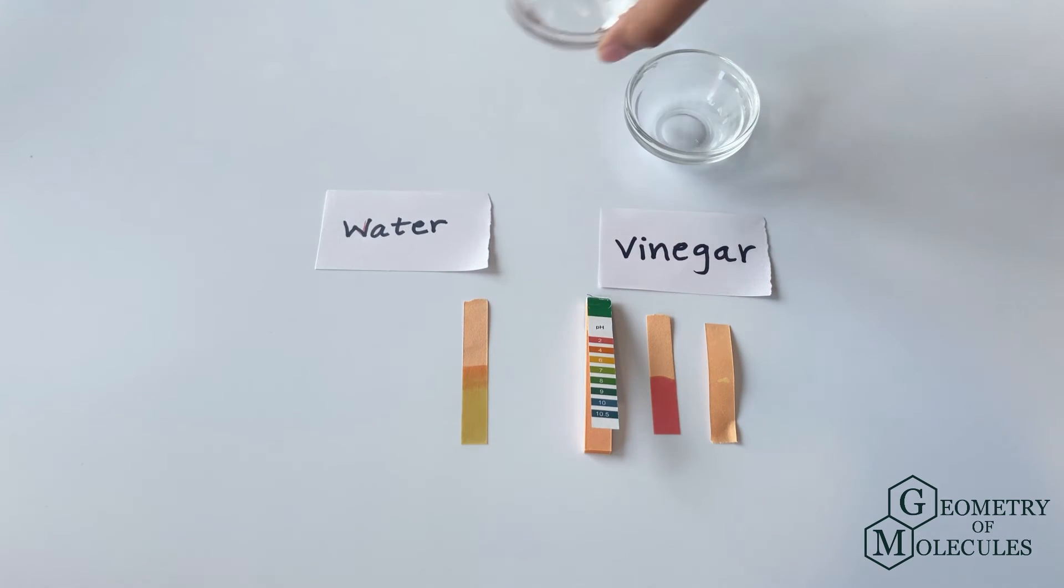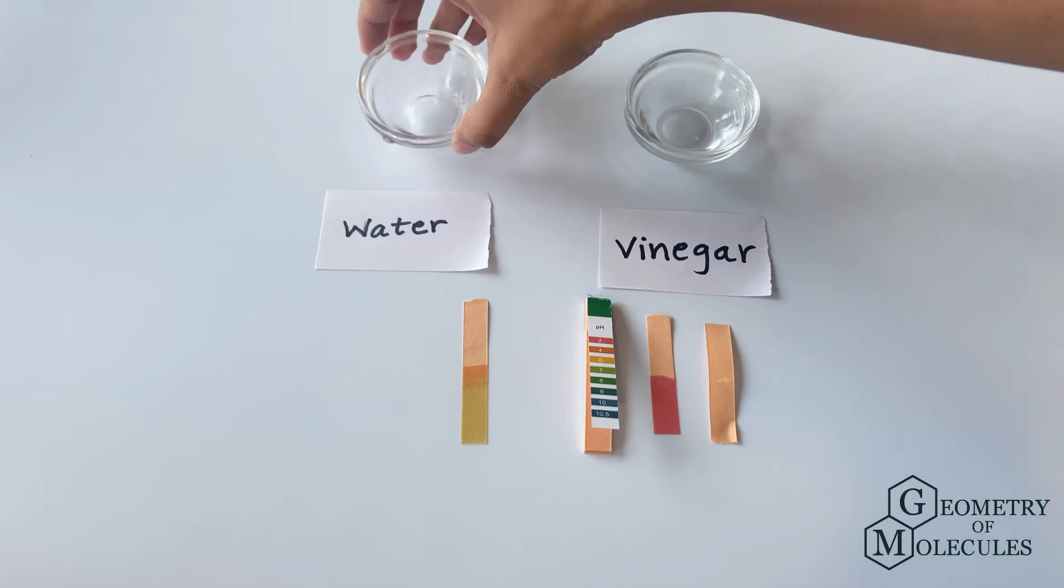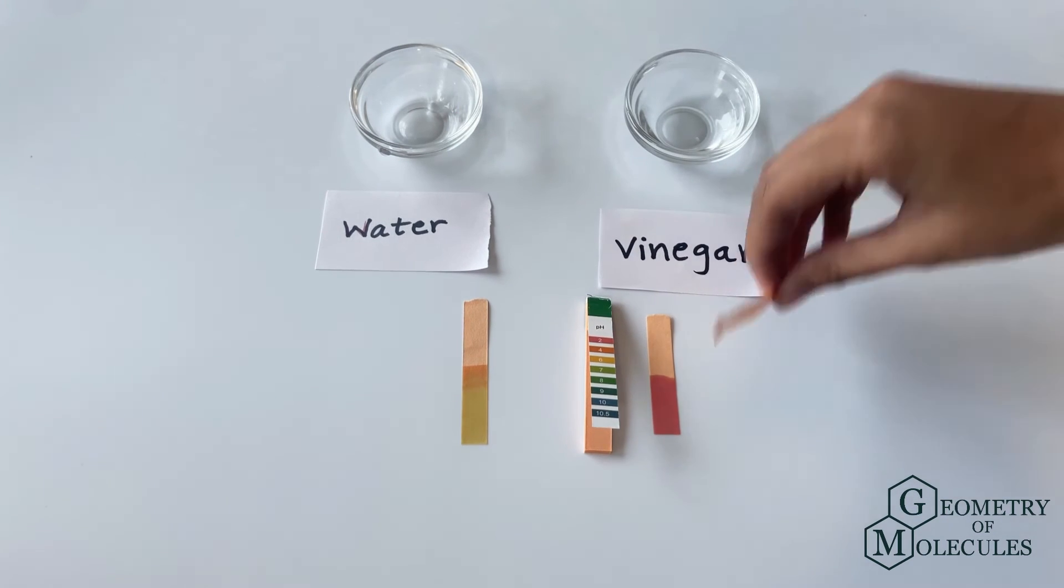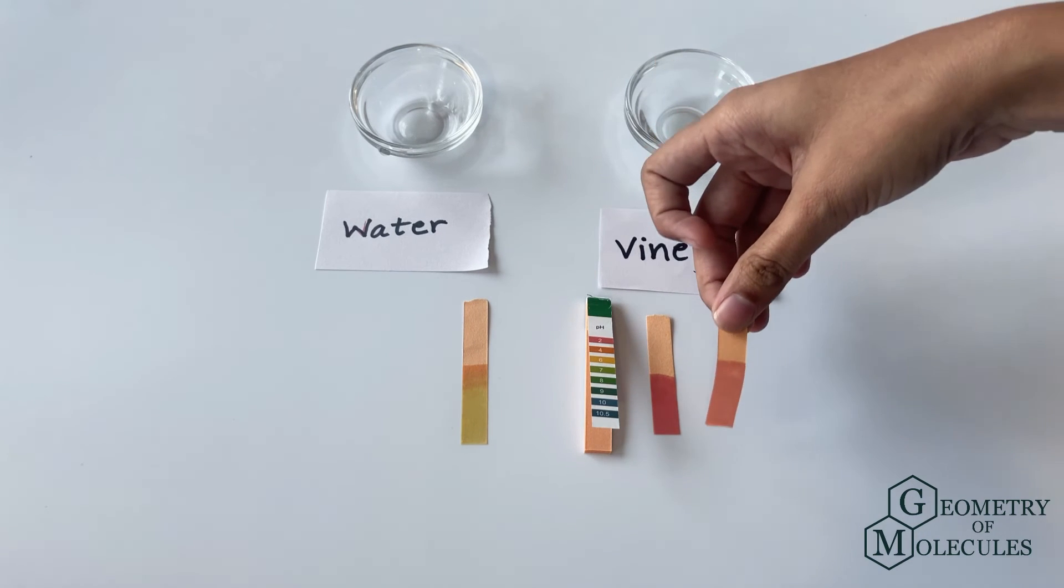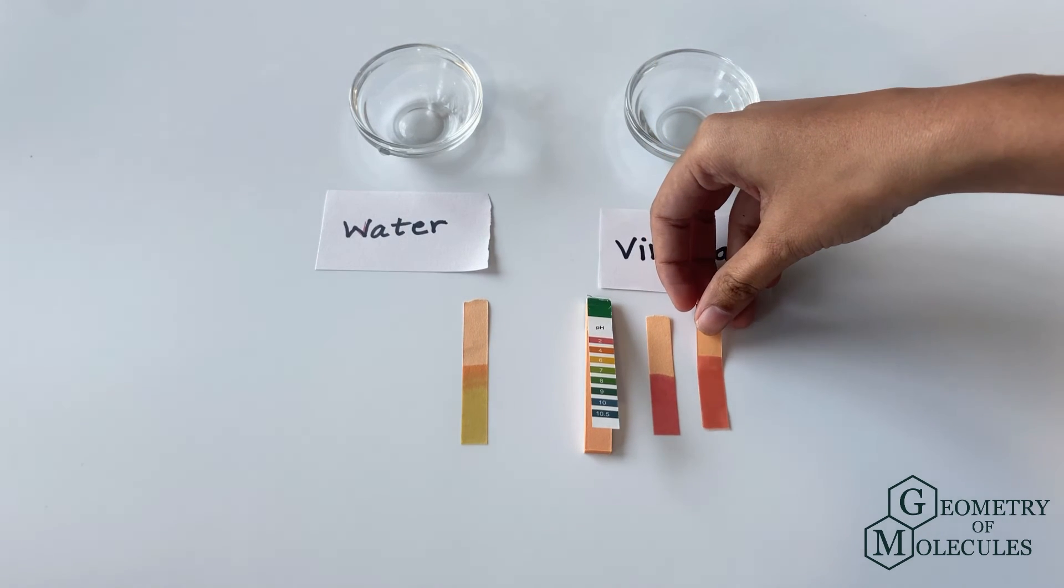Also, if we keep diluting the vinegar, its pH will rise because its acidity will decrease. So let us test that too. See, it is not as dark as the undiluted one.